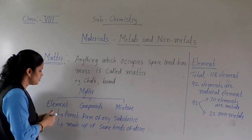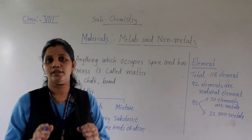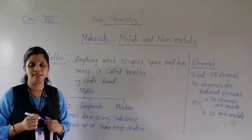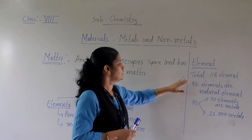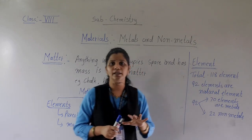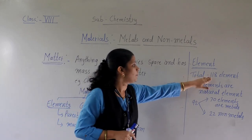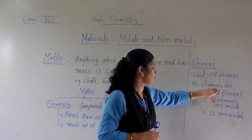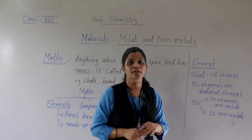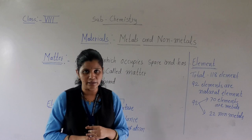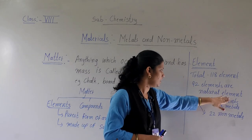First is elements. You have heard this word before. In our periodic table — which you have pasted — there are a total of 118 elements. All matter is made up of elements. Out of 118 elements, 92 elements are natural elements, meaning they are found naturally in the Earth's crust.